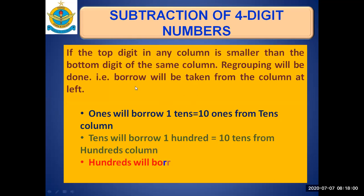Regrouping means borrow will be taken from the column at the left. In addition, we were given carry. But in subtraction, we take borrow. Ones will borrow 1 tens, that is equal to 10 ones from tens column. If it's tens column, it will borrow 1 hundreds, that is equal to 10 tens from hundreds column. And, hundreds will borrow 1 thousand, that is equal to 10 hundreds from thousands column.